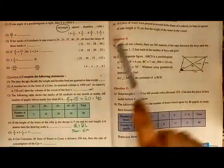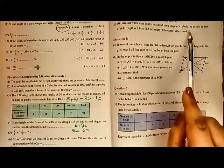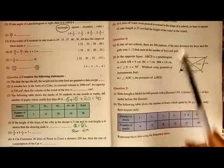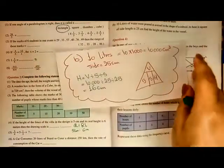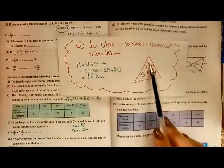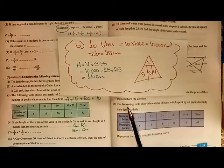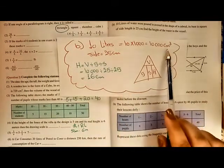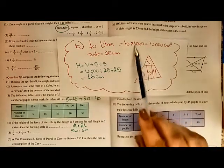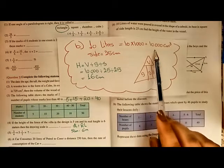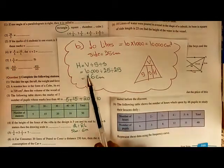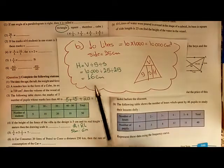Question number 2 (second section): 10 liters of water are poured into a vessel shaped as a cuboid with a square base of side 25 centimeters. We convert 10 liters to 10,000 cubic centimeters. Height equals volume divided by side divided by side: 10,000 divided by 25 divided by 25 equals 16 centimeters.